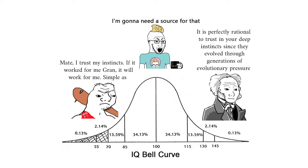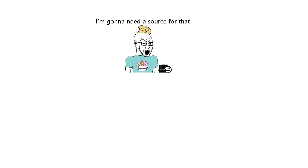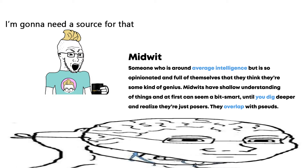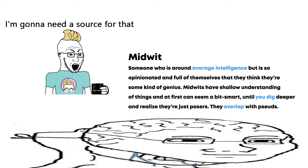The IQ bell curve in particular is a great way to point out an odd phenomenon, which is how both high IQ and low IQ individuals think alike, whereas the middle or midwits are the outliers. A midwit is someone who is around average intelligence but is so opinionated and full of themselves that they think they're some kind of genius. Midwits have a shallow understanding of things and at first they can seem a bit smart until you dig deeper and realize they're just posers. They overlap with pseudo-intellectuals.